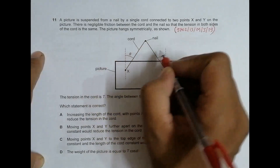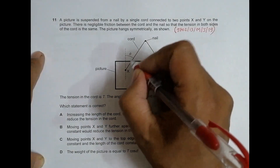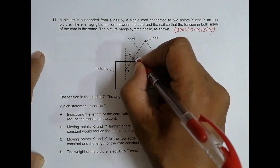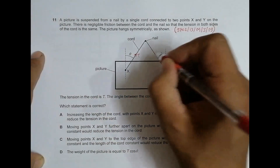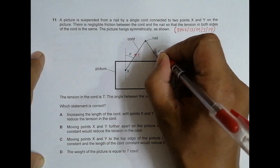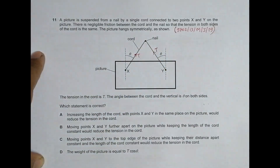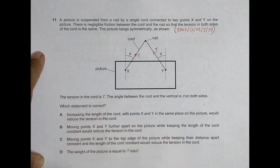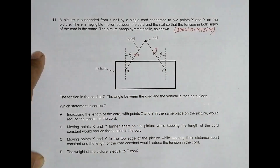At point X the tension force acts in one direction T, and at point Y the tension force acts in the other direction T. Both are equal tension T. The angle between the cord and the vertical is theta on both sides.